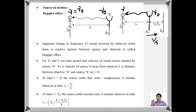The apparent change in the frequency of a sound or light by an observer when there is relative motion between source and observer is called Doppler effect. That is, when the source is at rest and the observer is at rest, ν₀ is the frequency of the source and the frequency observed by the observer is also ν₀. But when the source or observer is in motion, the frequency observed by the observer is different from ν₀.